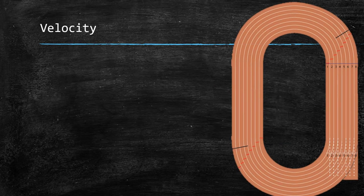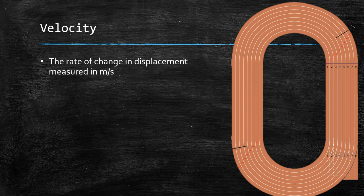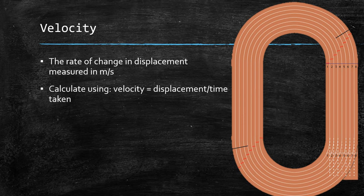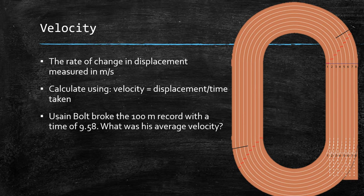Moving on to velocity. Velocity is the rate of change in displacement, measured in metres per second. Speed is the rate of change in distance; velocity is the rate of change in displacement. You calculate it using: velocity equals displacement divided by time. Usain Bolt broke the 100 metre record with a time of 9.58 seconds. His average velocity was 10.44 metres per second — calculated by dividing 100 metres by 9.58. Because the displacement and distance are both 100 metres in this event, his average speed is the same as his average velocity.